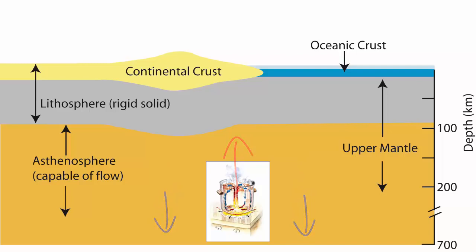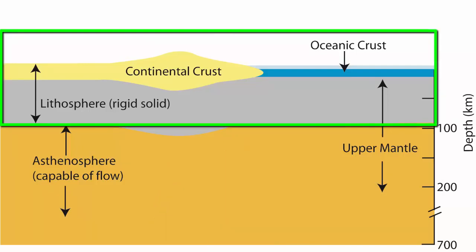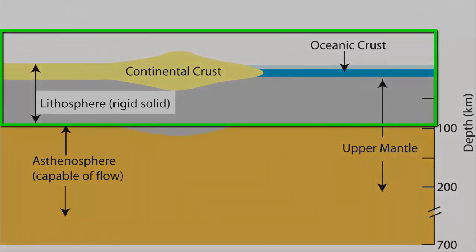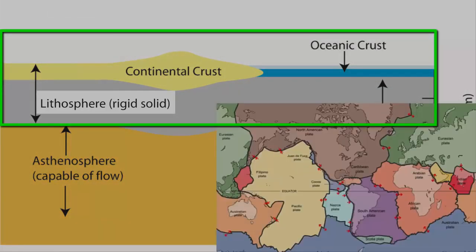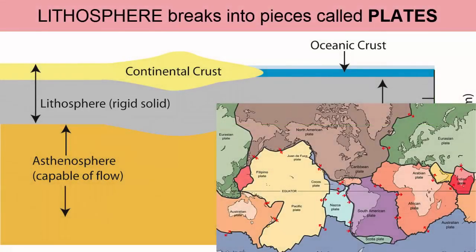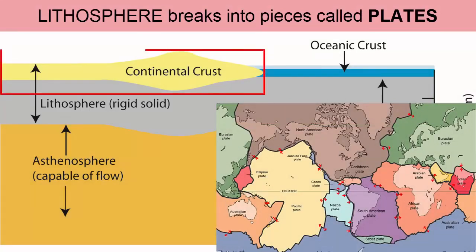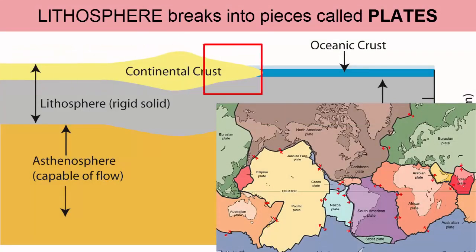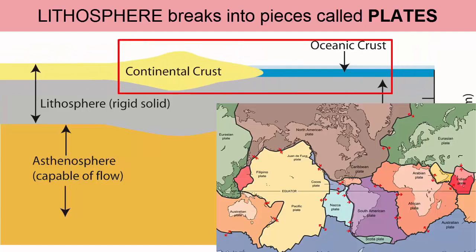The rest of the upper mantle plus all of the crust are fused together. We call that combination of crust plus upper mantle that sits above the asthenosphere the lithosphere. The lithosphere is broken up into pieces that we call plates. Some of the pieces contain continental crust, some ocean crust, and some contain both side by side.